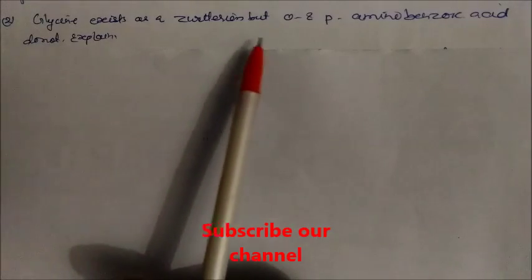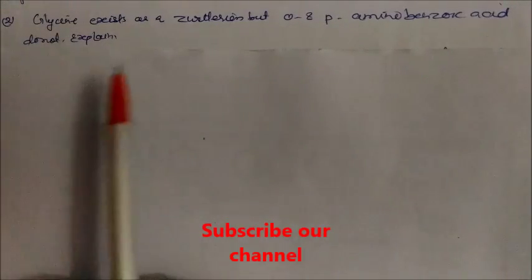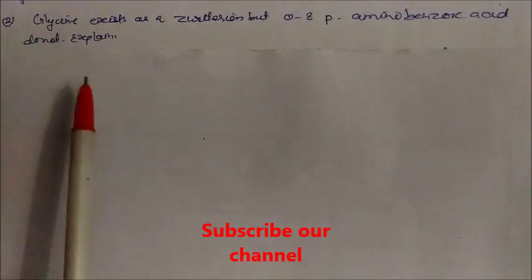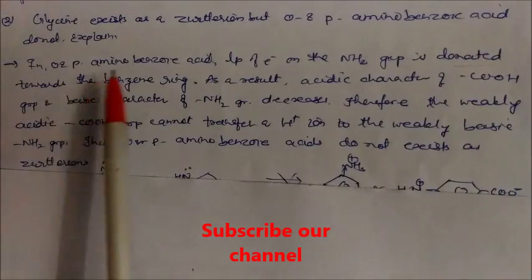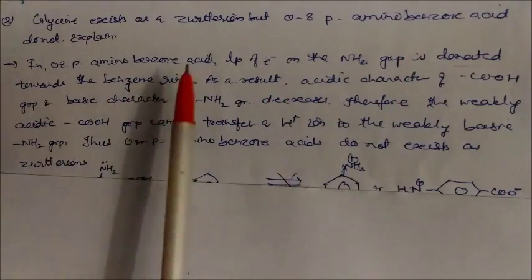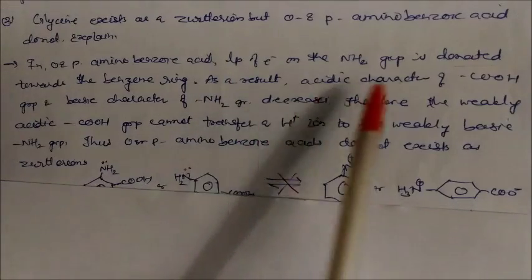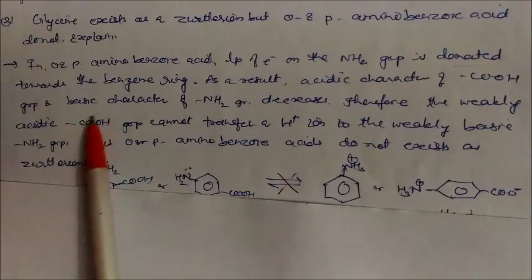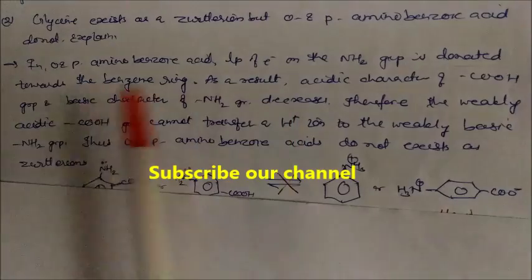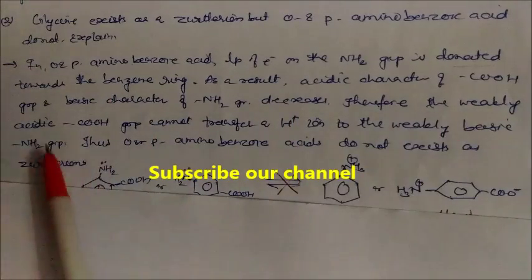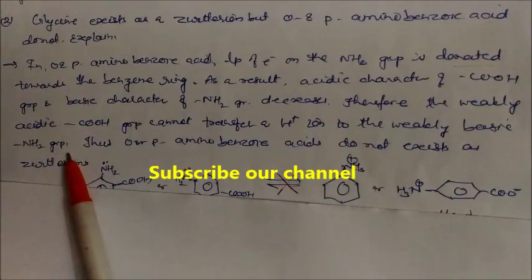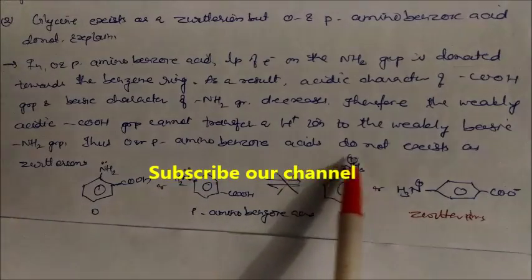Glycine exists as a zwitterion but ortho and para aminobenzoic acids do not. In ortho and para aminobenzoic acid, the lone pair of electrons on the amino group is donated to the benzene ring. As a result, the acid character of the carboxyl group and the basic character of the amino group both decrease. Therefore, the weakly acidic carboxyl group cannot transfer H⁺ to the weakly basic amino group.